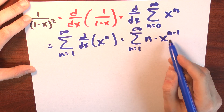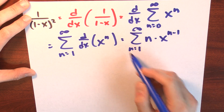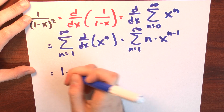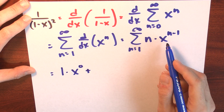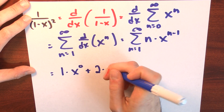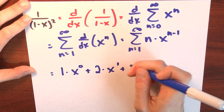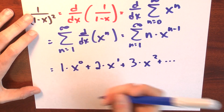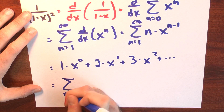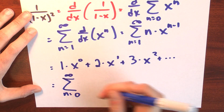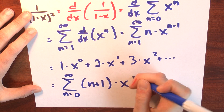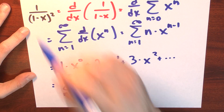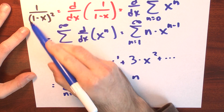If I don't like having the n minus 1 there, I could re-index this series. When I plug in n equals 1, that's 1 times x to the 0. When n equals 2, that's 2 times x to the 1st. When n equals 3, that's 3 times x squared, and so on. So I could rewrite this series as the sum n goes from 0 to infinity of n plus 1 times x to the nth power. I've written down a power series for the function 1 over 1 minus x quantity squared.